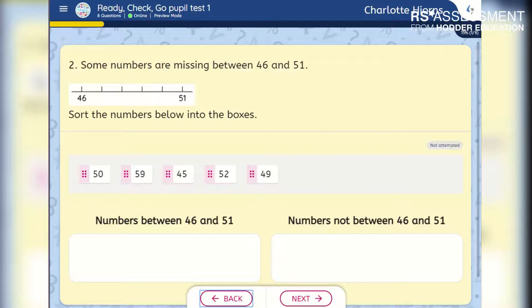This is an example of a sorting question. Pupils will click or tap each number and then click or tap the box in which they want to place them.